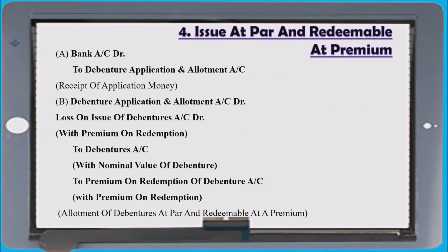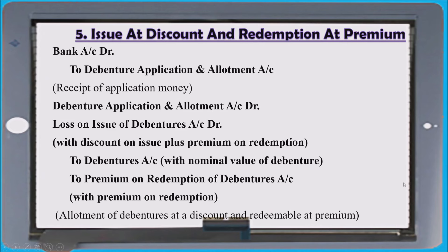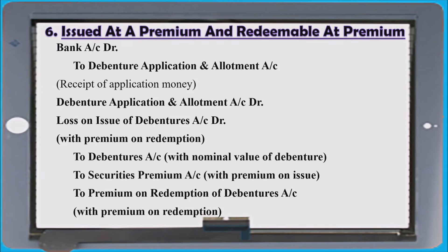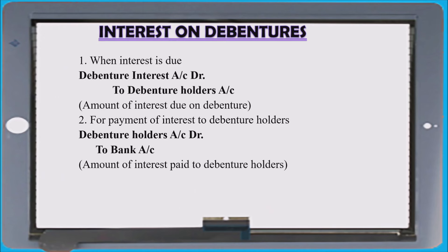This is a very important hot-level area — the three cases integrated with other areas. Issued at par and redeemable at par: there is a possibility for loss, and that loss will be debited in the second entry as loss on issue of debenture. Issued at discount and redeemable at premium: the loss will be more because the discount creates loss and redeeming at premium also creates loss. Issued at premium and redeemable at premium: there is a possibility for offsetting the loss using the securities premium account.